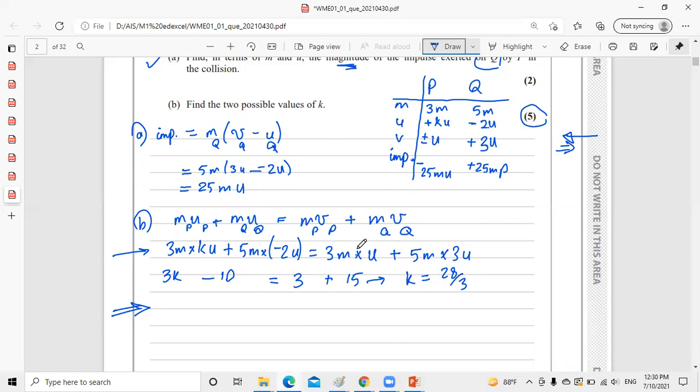The second possible value: I'll put the same thing but switch the sign to negative. 3M times KU plus 5M times negative 2U equals 3M times negative U plus 5M times 3U. Canceling M and U: 3K minus 10 equals negative 3 plus 15. Negative 3 plus 15 is 12, so 3K equals 22. The other value of K is 22 divided by 3. These are the two possible values for K in this question.